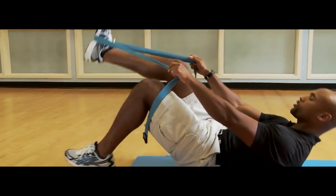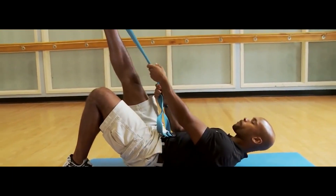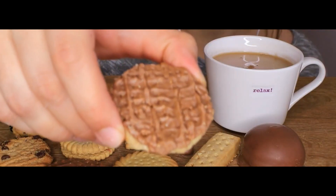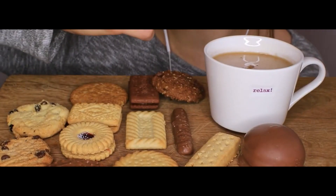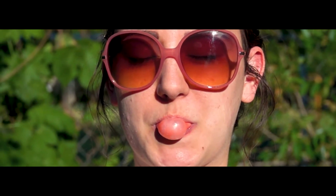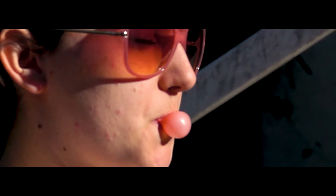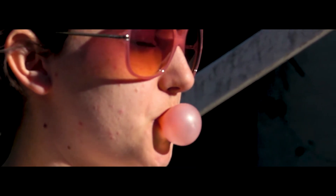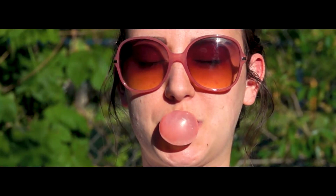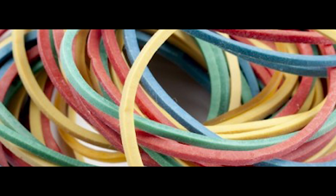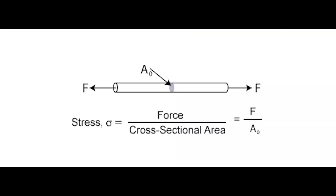There are brittle and ductile materials. For an analogy, when brittle material experiences fracture, there will be no deformation prior, like when we are eating a biscuit. While ductile material is a material like chewing gum — before we pull apart the chewing gum into two parts, it will stretch first. Have you ever pulled apart a rubber band and split it into two pieces? The amount of load that you apply divided by the cross-sectional area of the rubber band is the strength of the material.